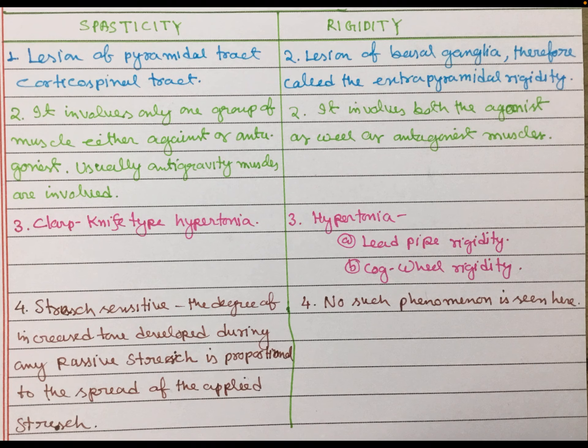Spasticity involves only one group of muscles, either agonist or antagonist — usually the anti-gravity muscles are involved. But in rigidity, it involves both the agonist and antagonistic muscles.